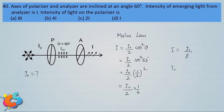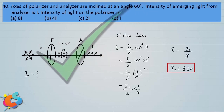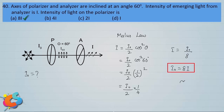Therefore I-naught = 8I, meaning the initial incident intensity is 8 times the emergent intensity. This is correctly expressed in option a, so option a is the correct answer.